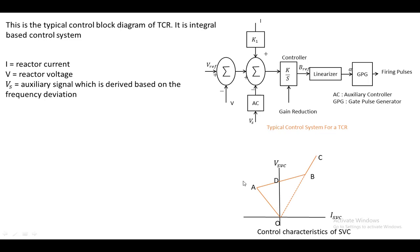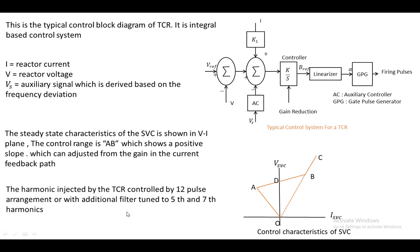The SVC characteristics on a V-I plane show the control region as line ABV with a positive slope, which can be controlled by changing the gain in the current loop. The harmonics injected by the TCR can be reduced using a 12-pulse arrangement, or additional AC filters to filter out the 5th and 7th harmonics generated by the TCR.